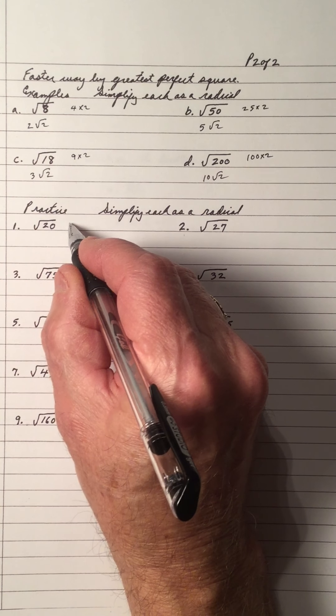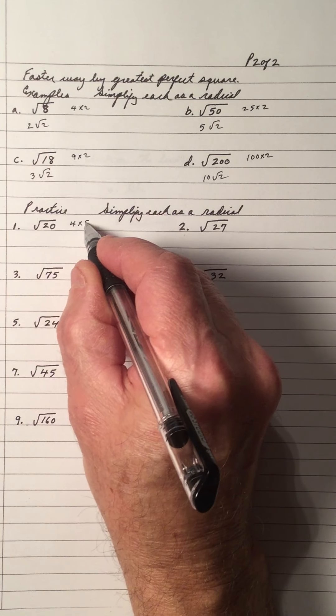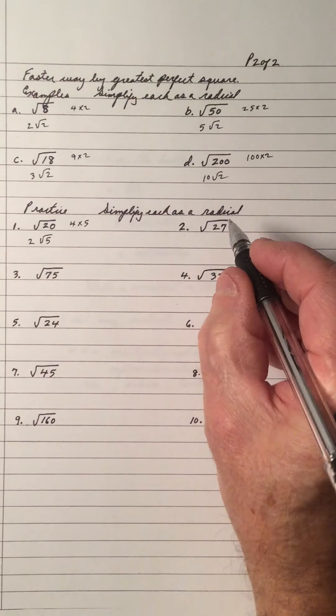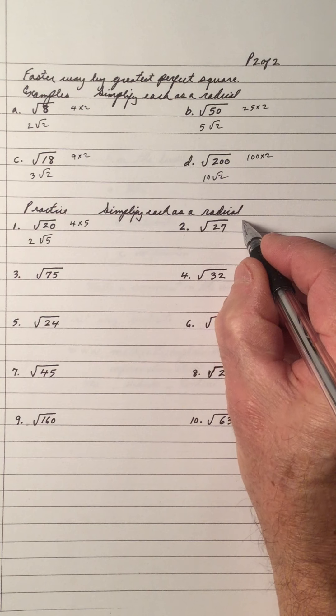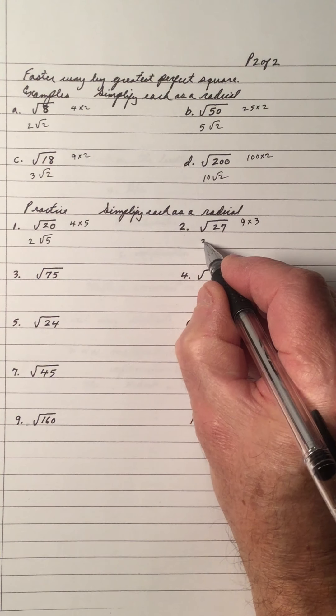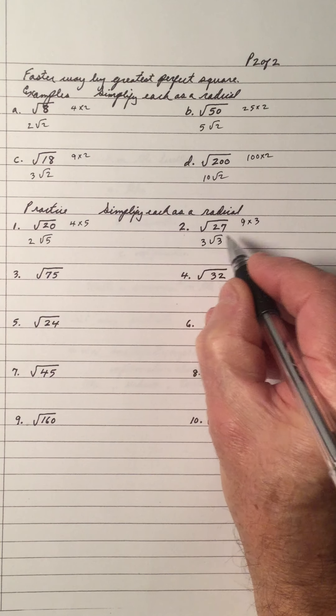20. The largest perfect square is 4. So it's 4 times 5. The square root of 4 is 2 root 5. 27. The largest perfect square is 9. 9 into 27 goes 3. The square root of 9 is 3 root 3.